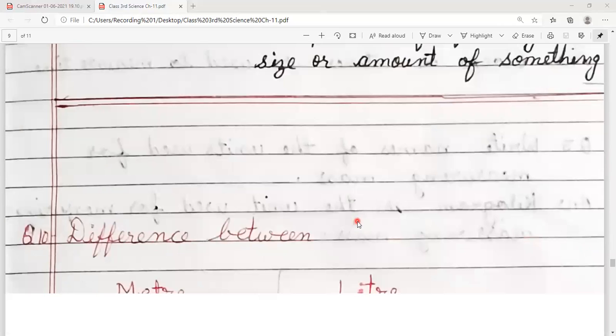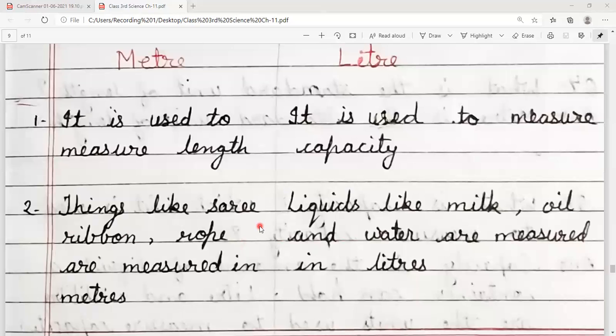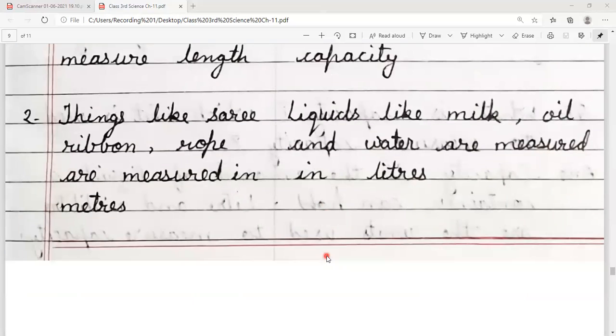Next is difference between meter and liter. Meter, it is used to measure length. Meter kab bhi use karte hain unit jab humein length measure karni ho. And liter, it is measure used to measure capacity. Liter hum use karte hain capacity ke liye. Number 2, things like sari, ribbon, rope are measured in meter and liquids like milk, oil, water are measured in liter.